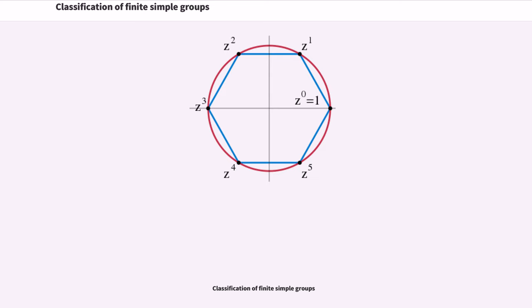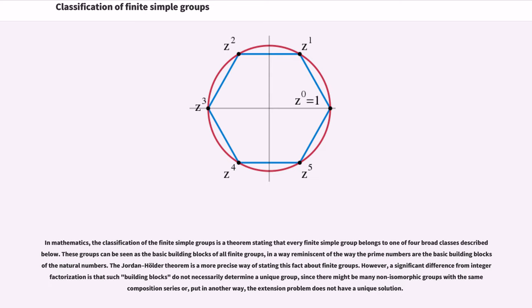Classification of finite simple groups. In mathematics, the classification of the finite simple groups is a theorem stating that every finite simple group belongs to one of four broad classes described below. These groups can be seen as the basic building blocks of all finite groups, in a way reminiscent of the way the prime numbers are the basic building blocks of the natural numbers. The Jordan-Holder theorem is a more precise way of stating this fact about finite groups.